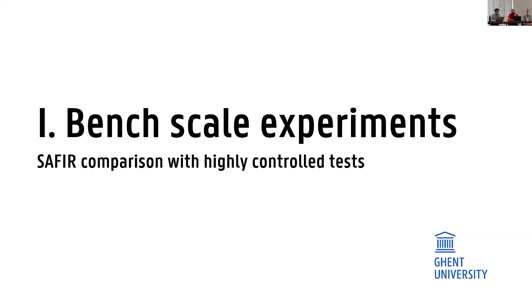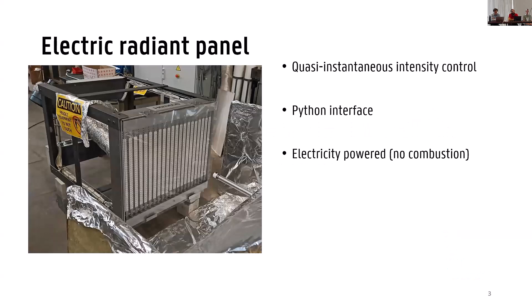As I said, I'm going to present bench scale experiments that we did as part of our post-fire assessment project. For these tests, we used our new electric radiant panel. So it's a radiant panel that we use to control the heat flux that we expose to the samples. It's an electric one, so it's quasi-instantaneous intensity control. Using the homemade Python interface, we can control the intensity of the panel quite precisely and we know the heat flux that is applied to our specimen with much precision and control almost instantaneously. And also because the panel is electric in power, there is no combustion, so it's quite safe to be used in our labs here.